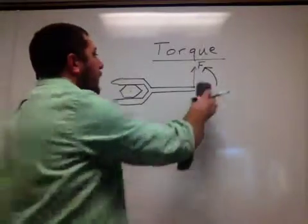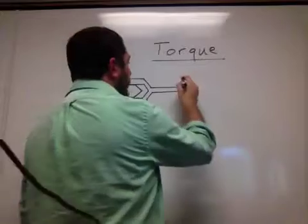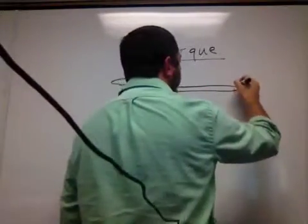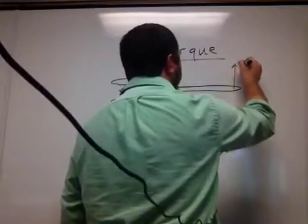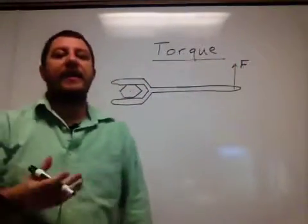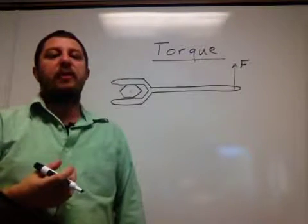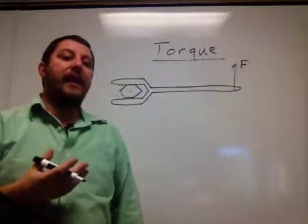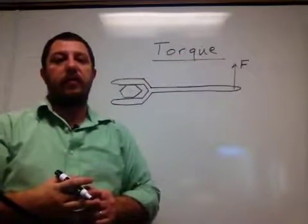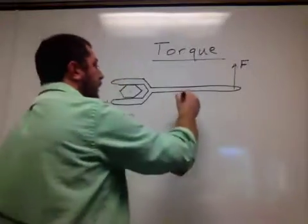If you get a wrench with a longer handle and apply the same force, you'll often find it's easier to twist the bolt. This is because a longer handle allows you to apply a larger torque to the object you want to cause rotation in.